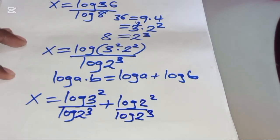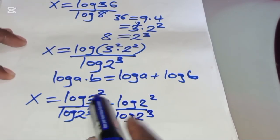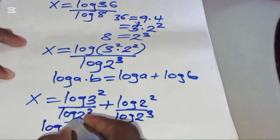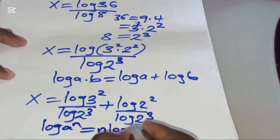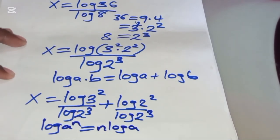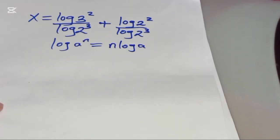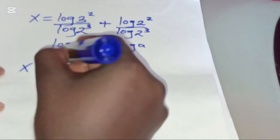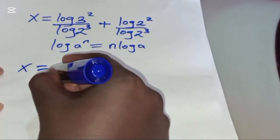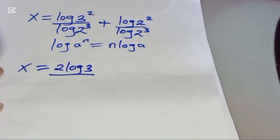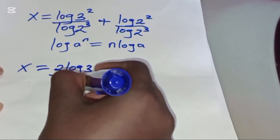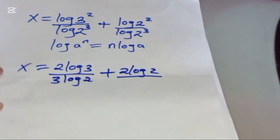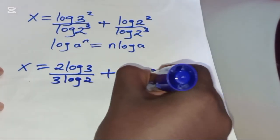Now applying the power rule property of logarithms — that is, log a to the power n becomes n times log a — we'll have x equal to 2 log 3 divided by 3 log 2, plus 2 log 2 divided by 3 log 2.